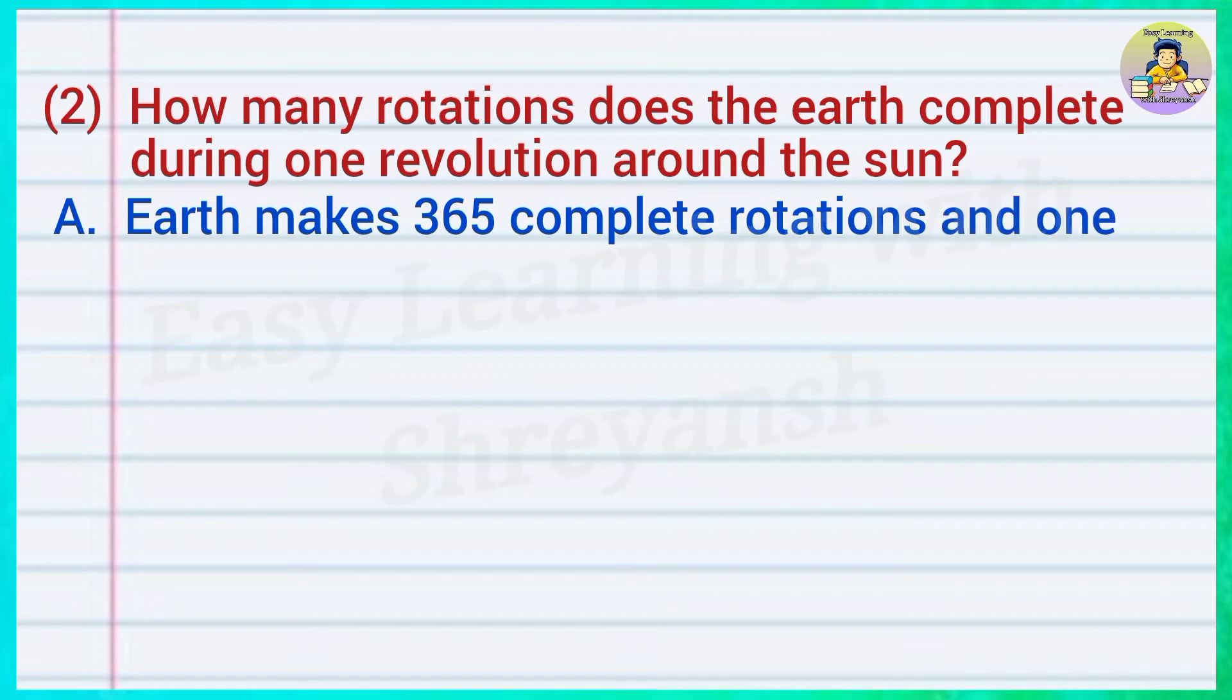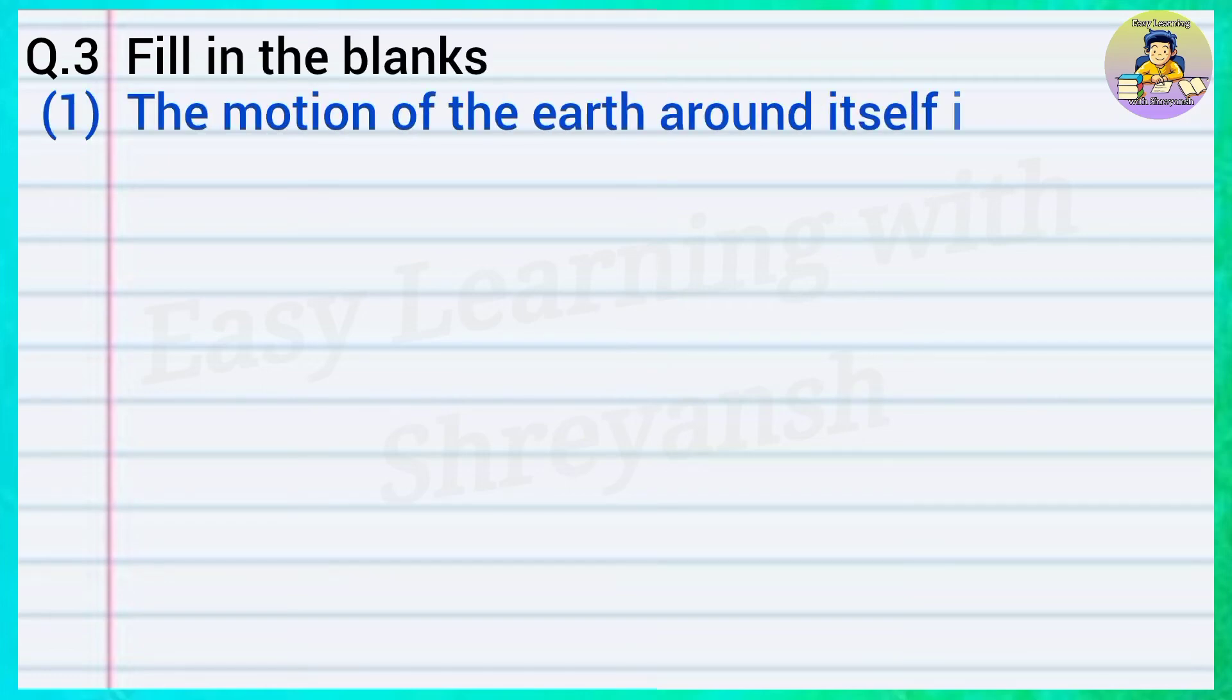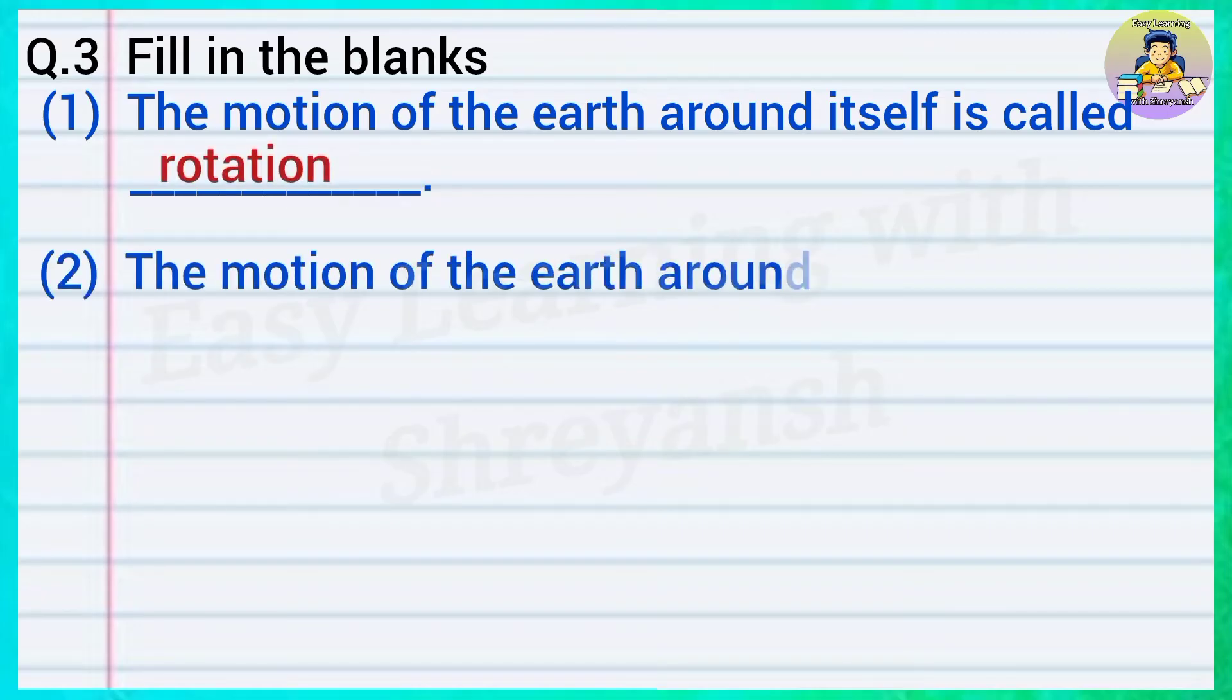Question number 3: Fill in the blanks. 1) The motion of the Earth around itself is called: Answer is rotation. 2) The motion of the Earth around the Sun is called: Answer is revolution.